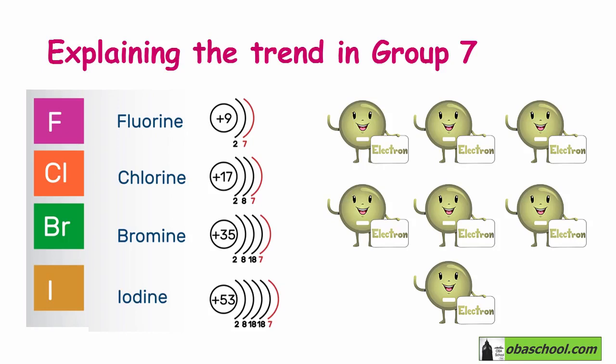So elements in Group 7 have seven outer electrons in the outermost shell. As we move down the group, the outermost shell electrons will become further away from the nucleus holding a positive charge.